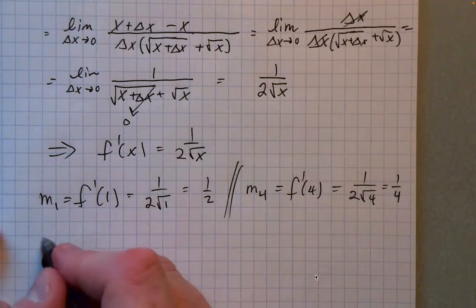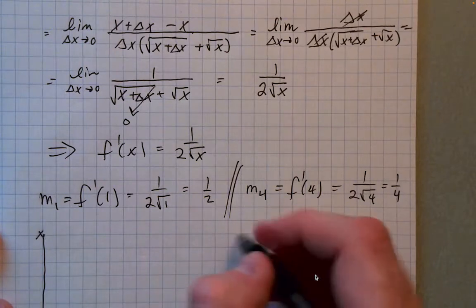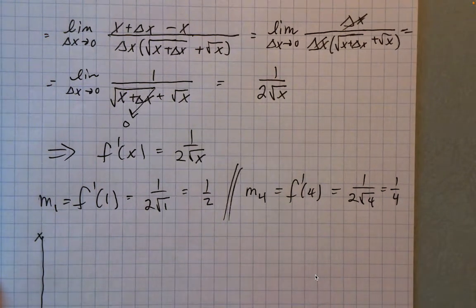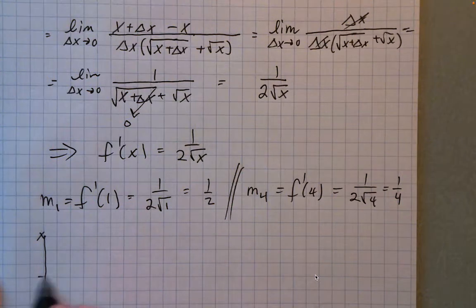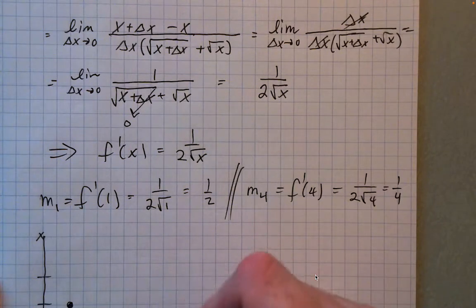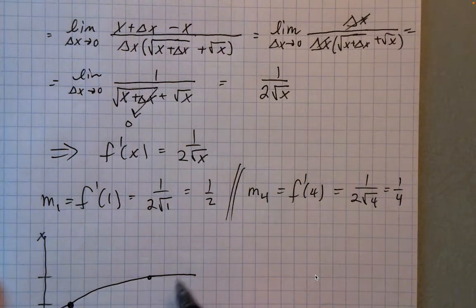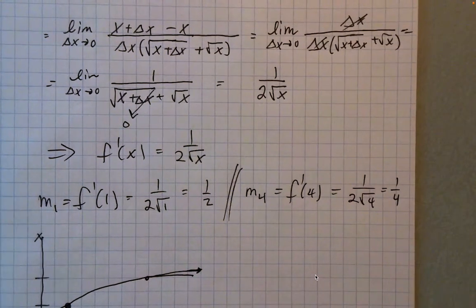Let's look at this function and see how it looks. The square root of x goes through zero-zero and through one-one. Out here at four, it's equal to two. It heads off and grows without bound, but slower than normal.